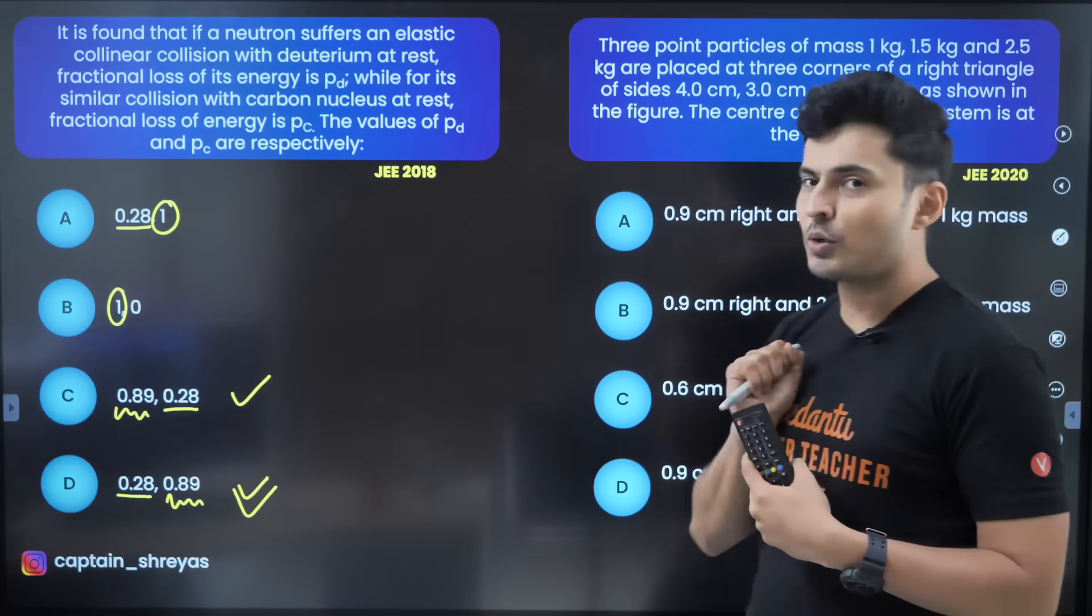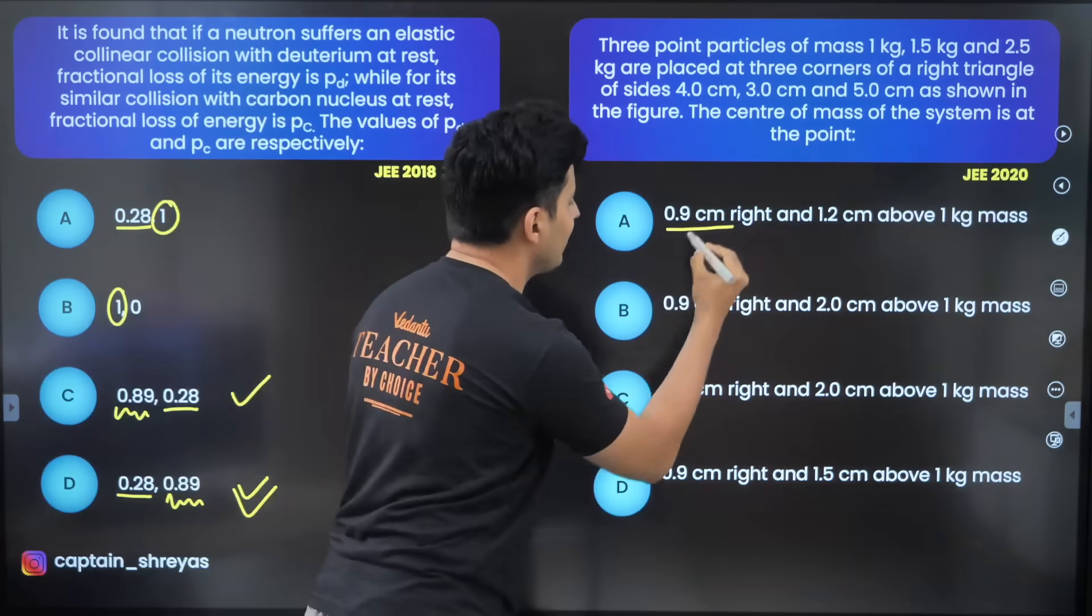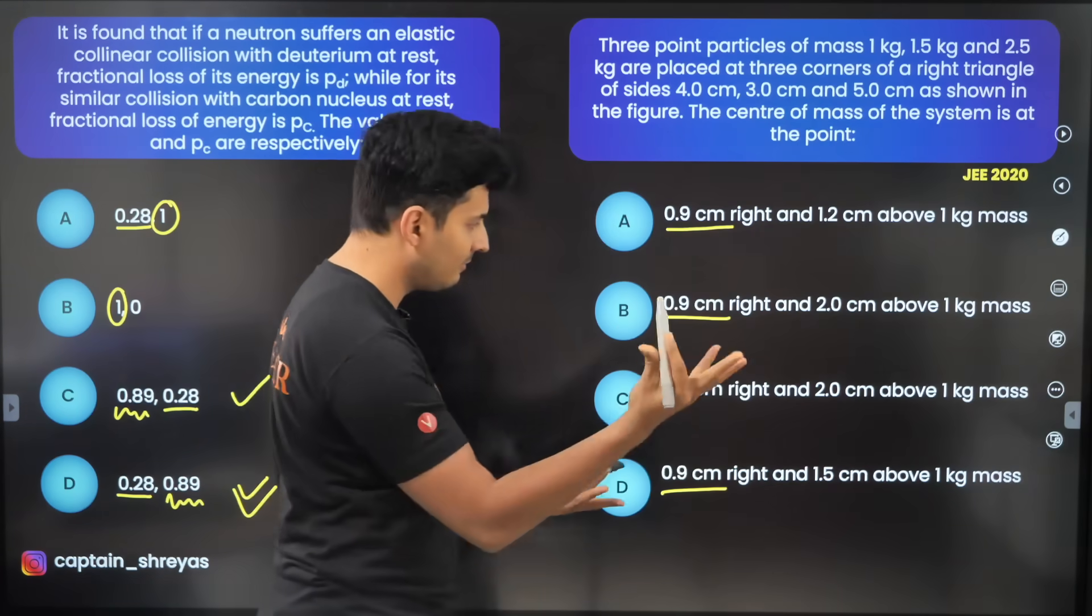Now let's go to the last question, question number four. So do I see some common numbers over here? Yes 0.9. Fair enough.